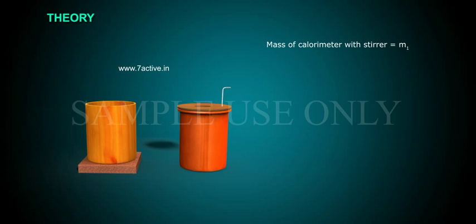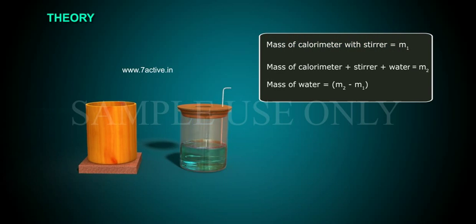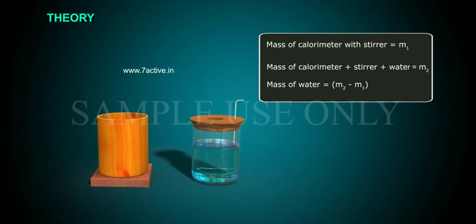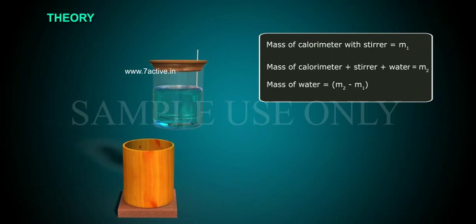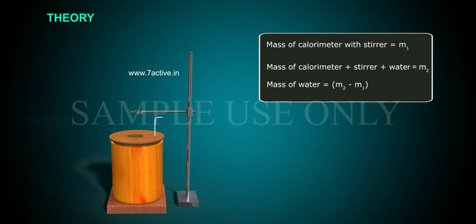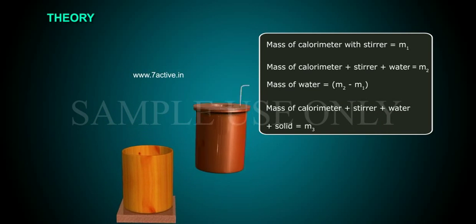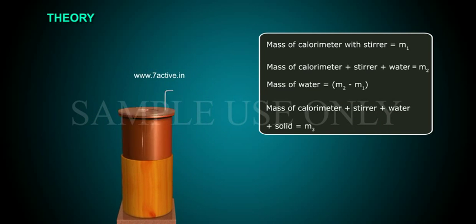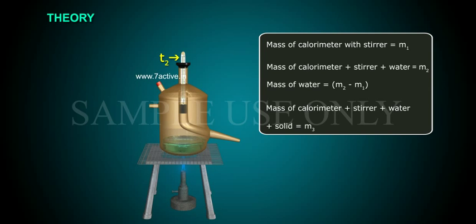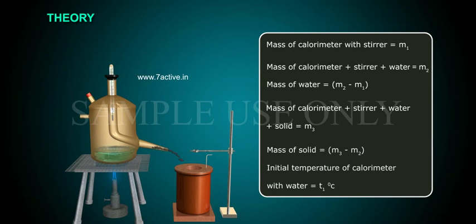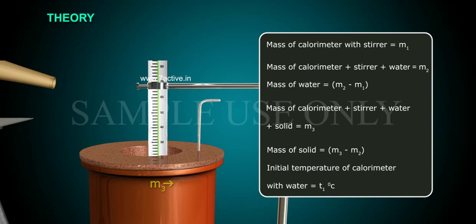Mass of calorimeter with stirrer is equal to M1. Mass of calorimeter plus stirrer plus water is equal to M2. Mass of water is equal to M2 minus M1. Mass of calorimeter plus stirrer plus water plus solid is equal to M3. Mass of solid is equal to M3 minus M2.